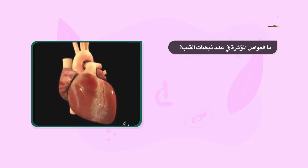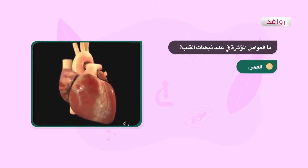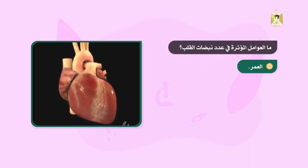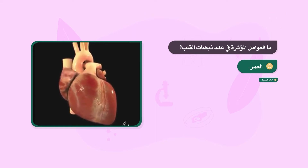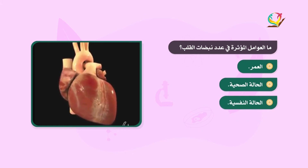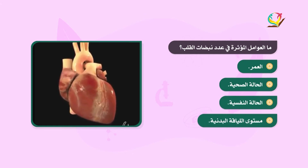يتأثر عدد نبضات القلب بعدة عوامل، مثل العمر، فمعدل نبض القلب عند الطفل يختلف عنه عند الإنسان البالغ ويختلف أيضاً عند كبار السن. ومن العوامل المؤثرة أيضاً الحالة الصحية كالإصابة ببعض الأمراض، والحالة النفسية كالخوف، ومستوى اللياقة البدنية.